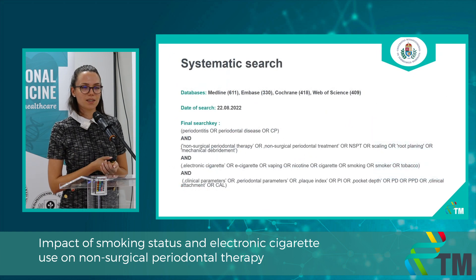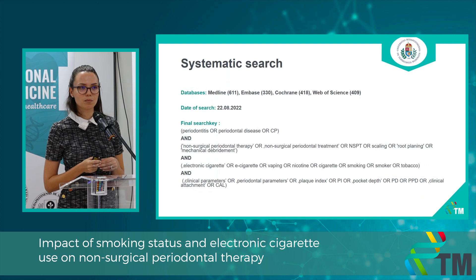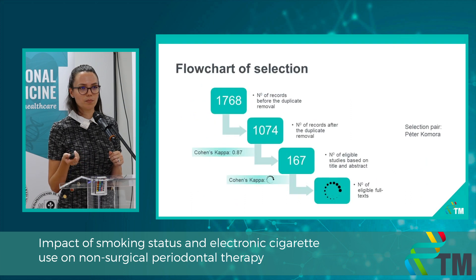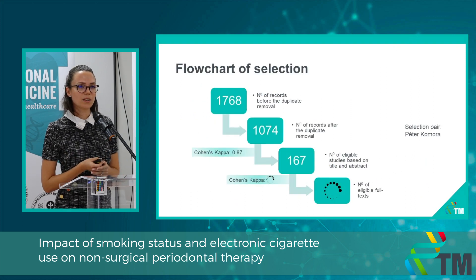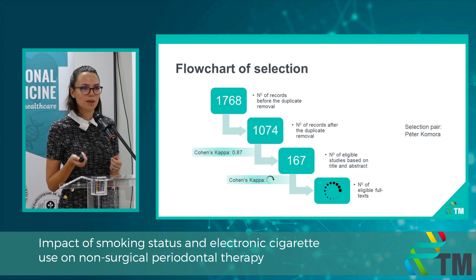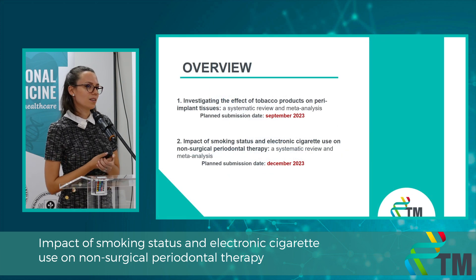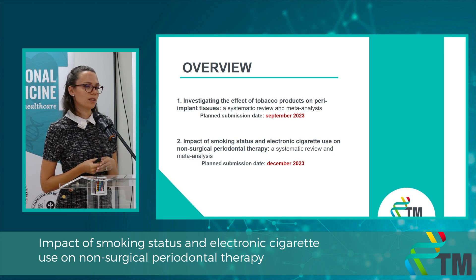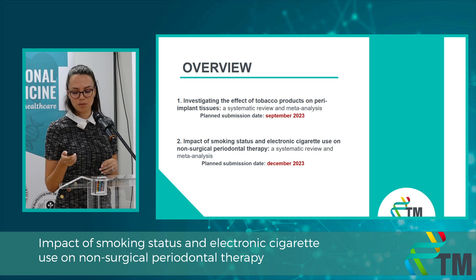The systematic search was conducted in four electronic databases, and we actually updated the search last week. In the selection process, we are done with the duplicate removal and the title selection, and currently we are doing the full-text selection with the selection pair. I plan to submit the first project in September and the second one in December.